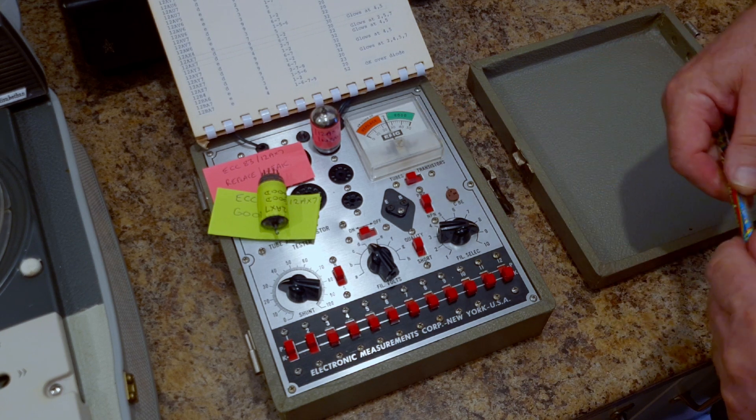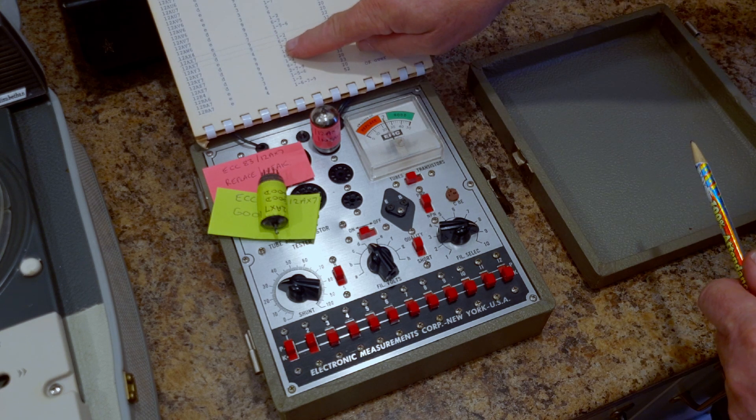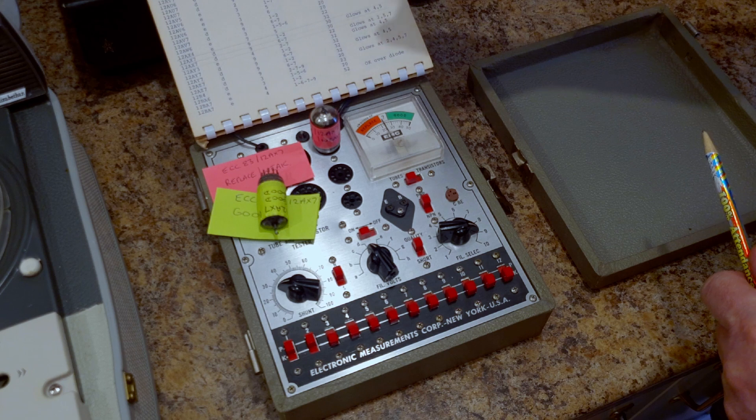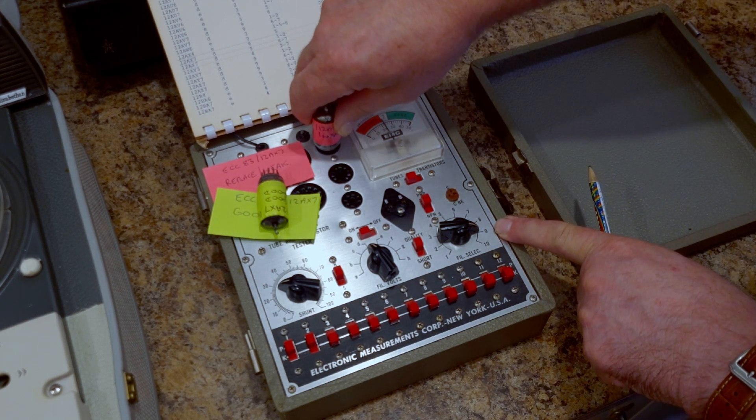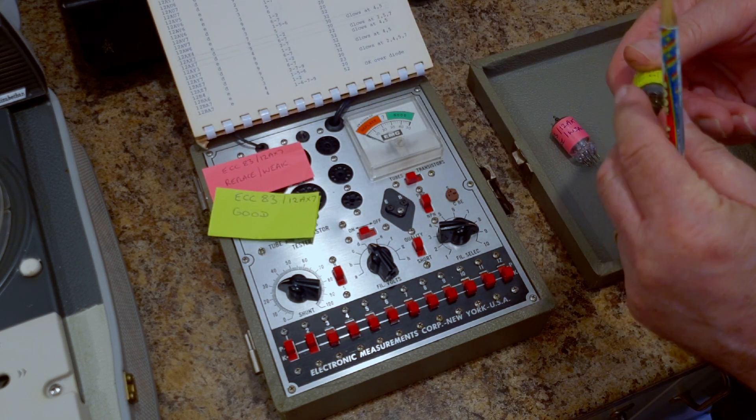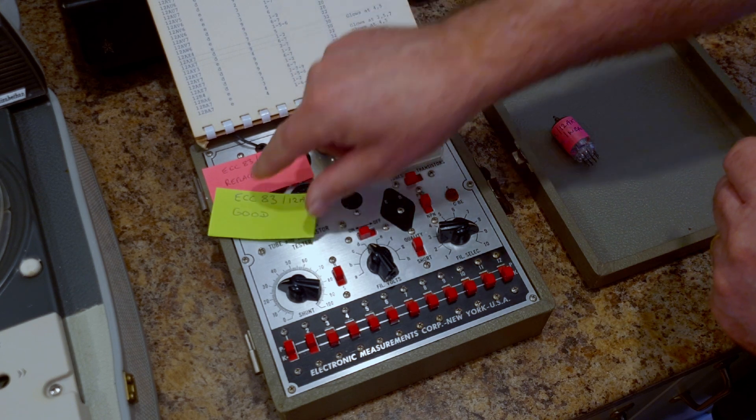It's a dual triode valve, so you can actually test both triodes separately on this tester. For the second triode, the switches go up to six and seven. We leave that one now. I'm just going to take this one out and put the good valve in.